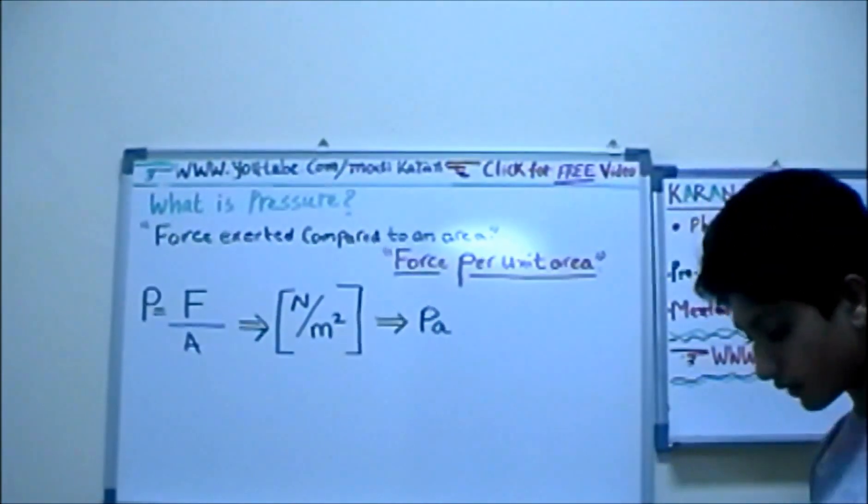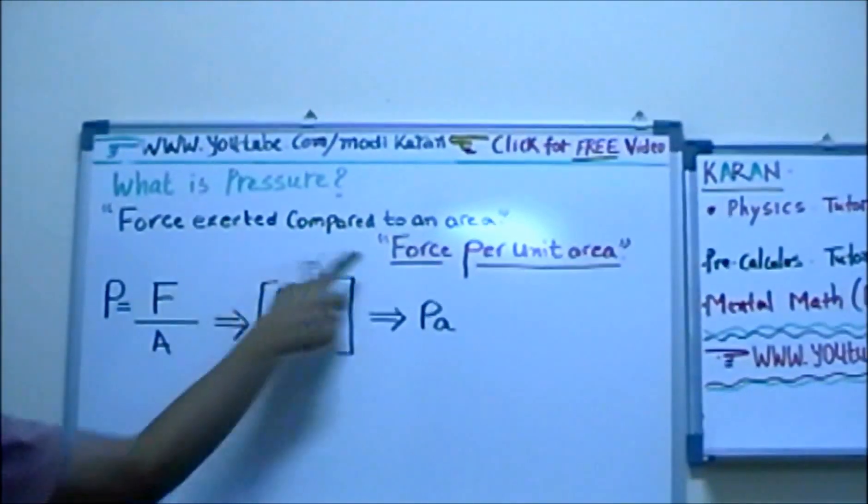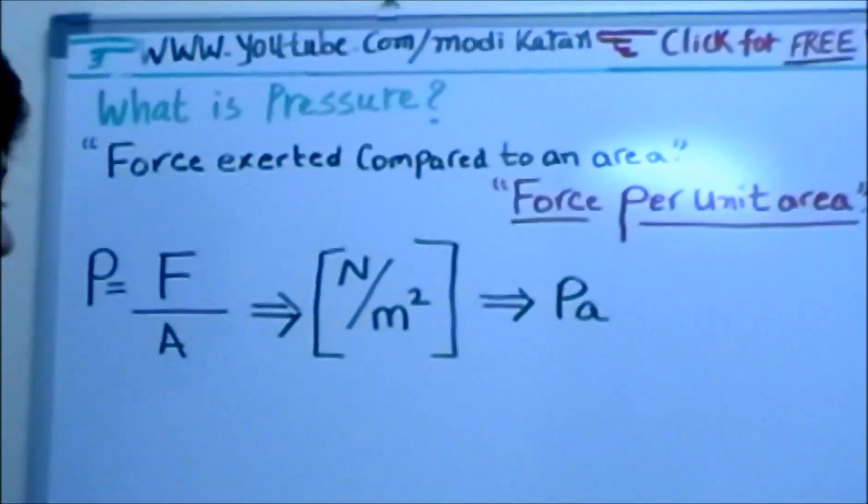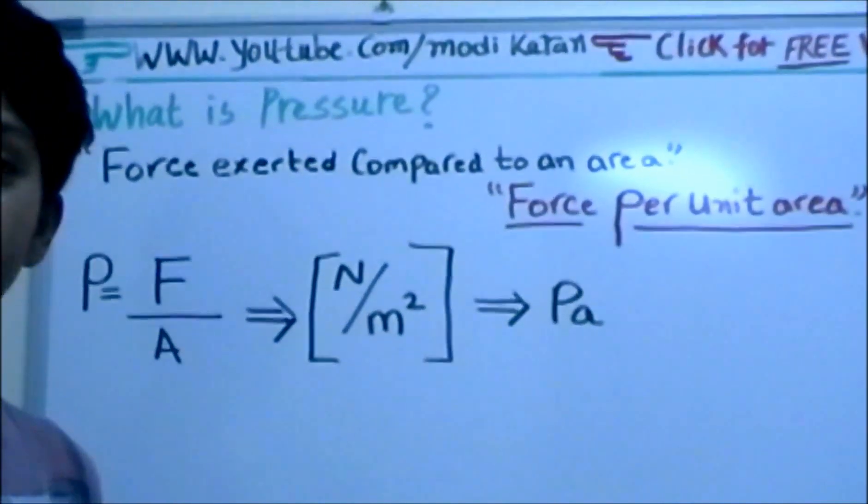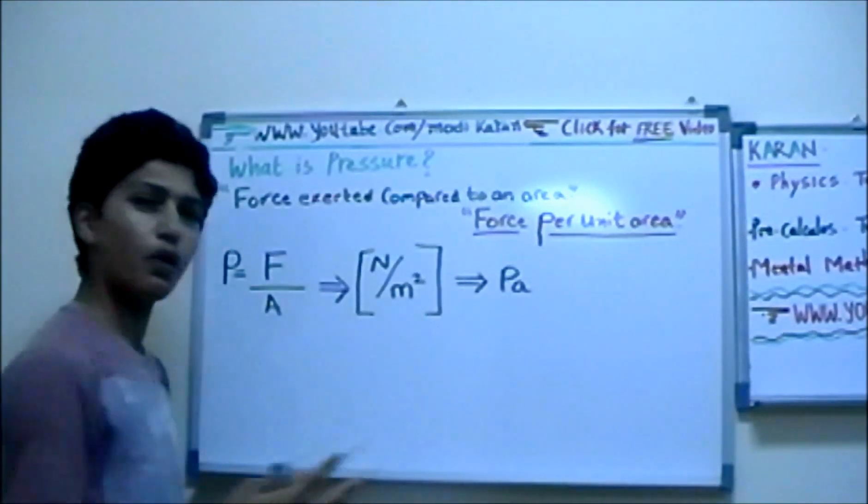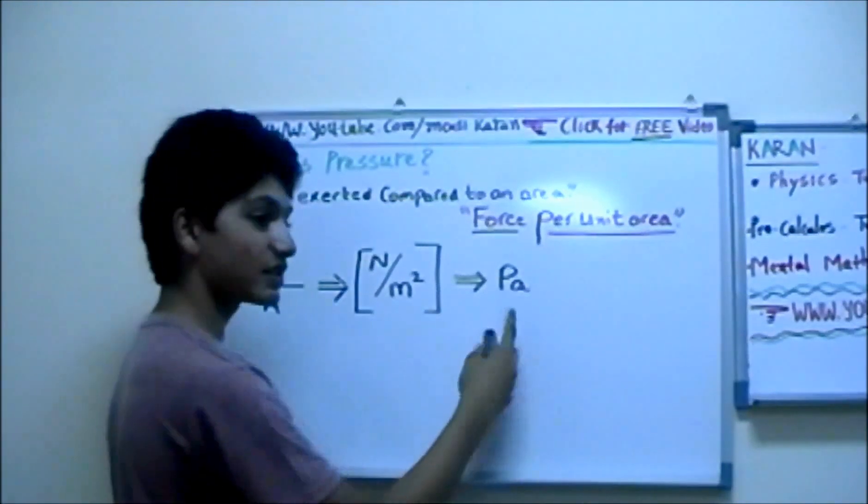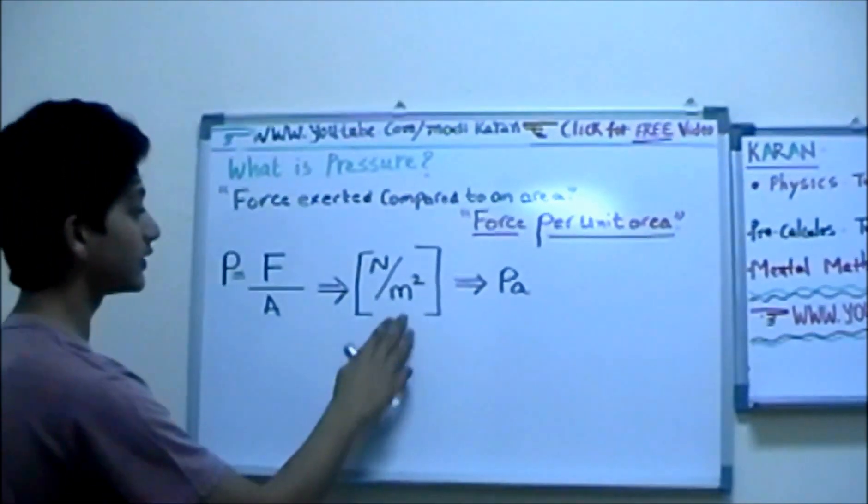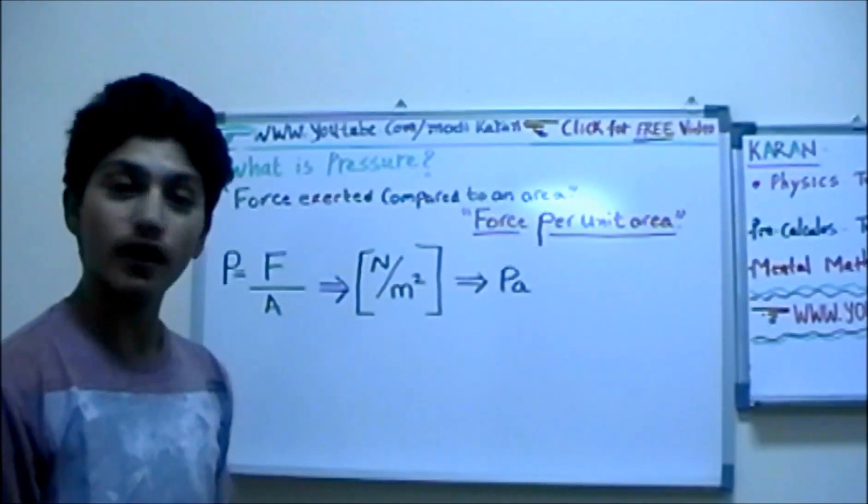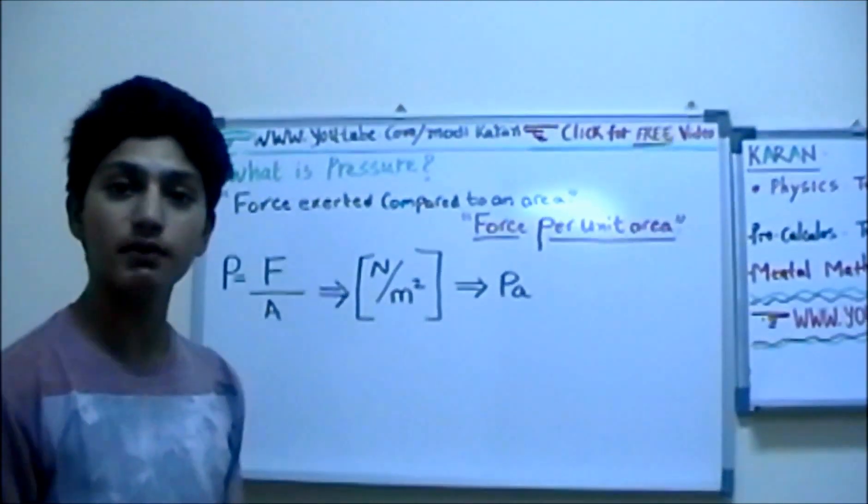Now, how do you calculate pressure? Let me show you. Pressure is equal to force exerted compared to an area divided by area. Now, what are the units of pressure? Well, unit of pressure is Newton divided by meters squared. Squared meters. Newton divided by meters squared. Well, it turns out that we have a special unit for it. What's it called? Well, it's called pascals.